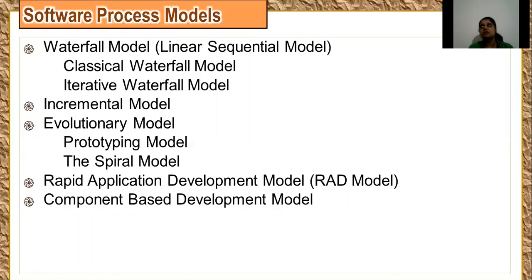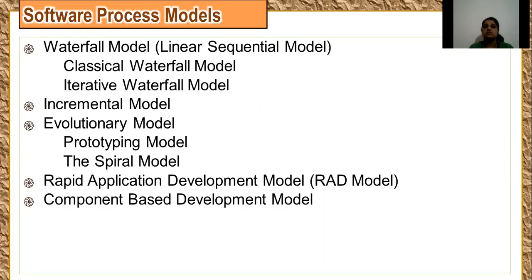For example, let us take Microsoft Word. Microsoft Word processing gives you the functionality of document production as a main feature. That is something which is desperately needed by the client, so we are providing it in the first release. Such main functions when released are called a core product. If your core product is successful, you will be given orders for later incremental delivery. Otherwise, your organization may fail to grab that project.